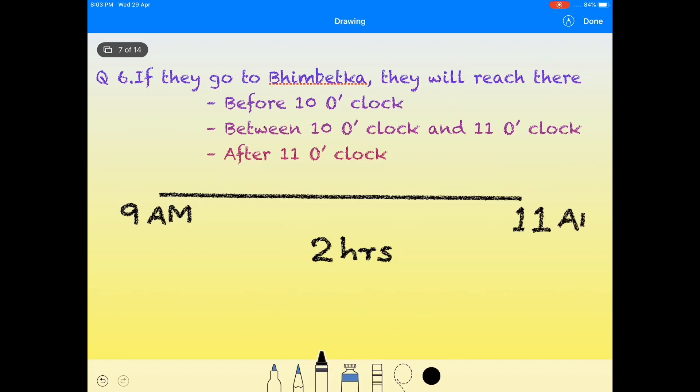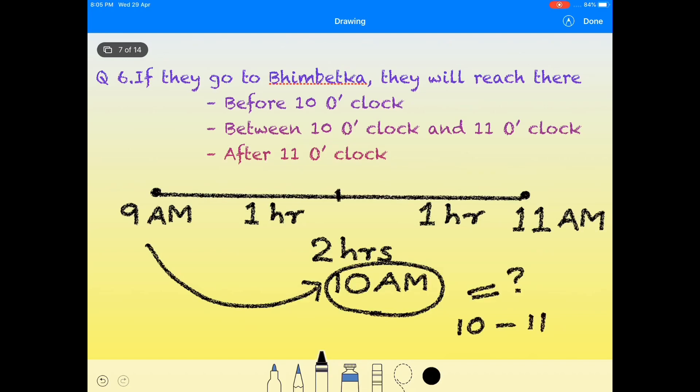So traveling 50 kilometers will be somewhere more than this place, as in one hour they would cover half of the distance at 10 o'clock. So traveling 50 kilometers will be more than one hour, so it must be after 10 o'clock. Therefore, it is between 10 o'clock and 11 o'clock.